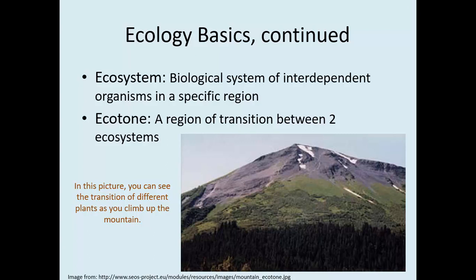An ecotone is simply a transition region between two different ecosystems. In the picture on this slide, you can see there's a forest ecosystem at the bottom. As you climb up the mountain, the climate changes, the amount of rainfall changes, the soils change, and temperature changes — all of this impacts what can live there. The green area with some shrubs as you get up toward the top of the mountain would be your ecotone, and then the region near the top of the mountain is a different ecosystem altogether.